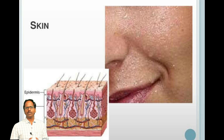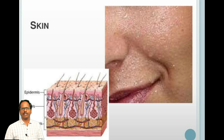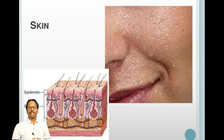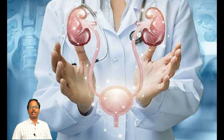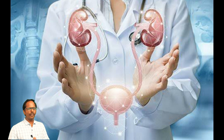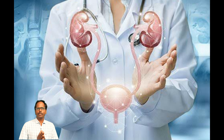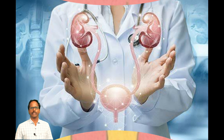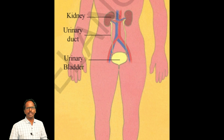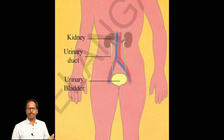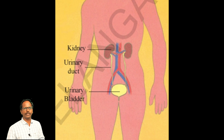Children, do you know — the skin is also an excretory organ. It sends out waste in the form of sweat. The doctor who performs surgery related to the kidney is called a urologist. This is information about the excretory system in our human body.